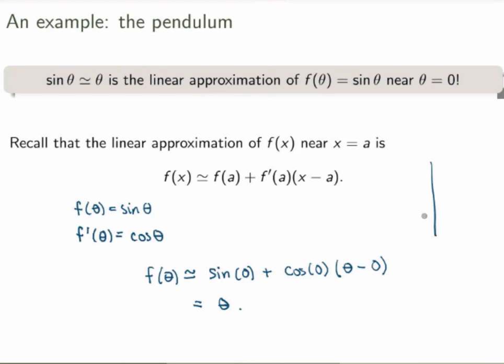Again, you can see from the graph that this makes sense. The function sin θ will look like something like this. So at the point θ equals 0, the tangent line here, my graph is not very good, but the tangent line here is just y equals θ.